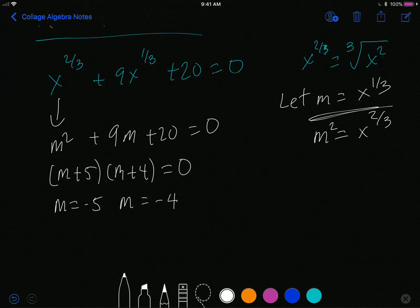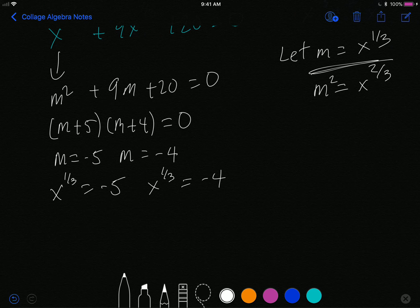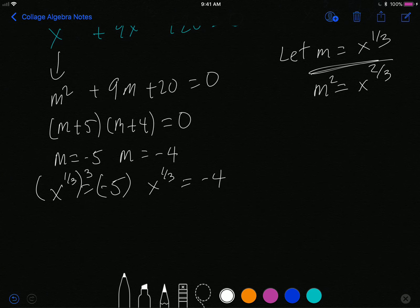Of course, I replace my m. So I have x to the one-third power is equals to negative 5. x to the one-third power is equals to negative 4. This is where the tricky part comes in. Well, what am I supposed to do to the one-third? Well, the trick is to get rid of the one-third. You raise both sides to the three power. Because one-third times three is one. Raise both sides to the one-third power. Raise both sides to the third power.